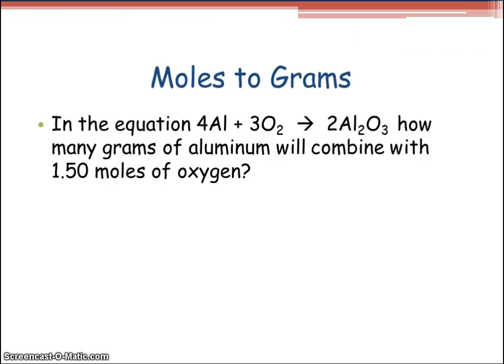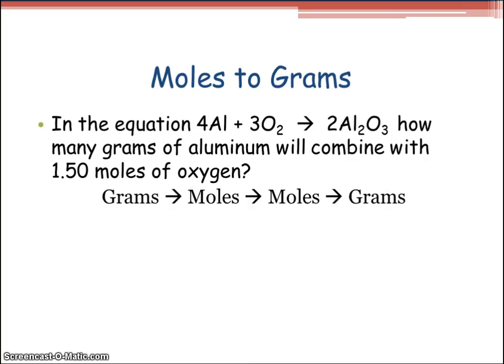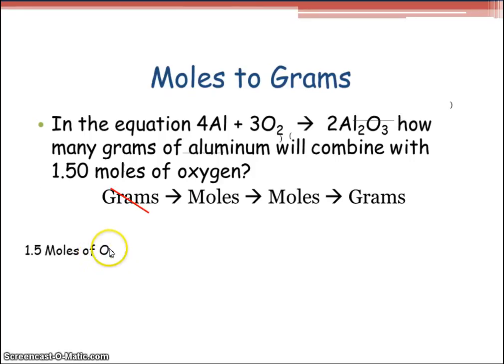Moles to grams. In the equation 4Al + 3O₂ yielding 2Al₂O₃, how many grams of aluminum will combine with 1.50 moles of oxygen? Again, write down grams to moles to moles to grams. What are we starting with? We have 1.50 moles of oxygen, so we don't need the first grams — cross it off. You should have three different setups: moles of O₂, moles of compound 2, and grams of compound 2. We're looking for grams of aluminum, so aluminum is our compound 2 — moles of aluminum and then grams of aluminum.